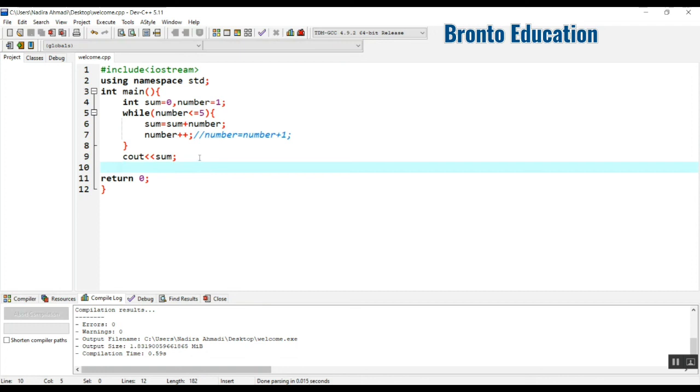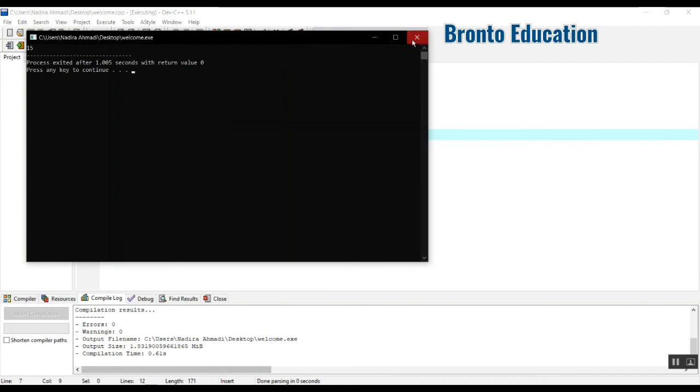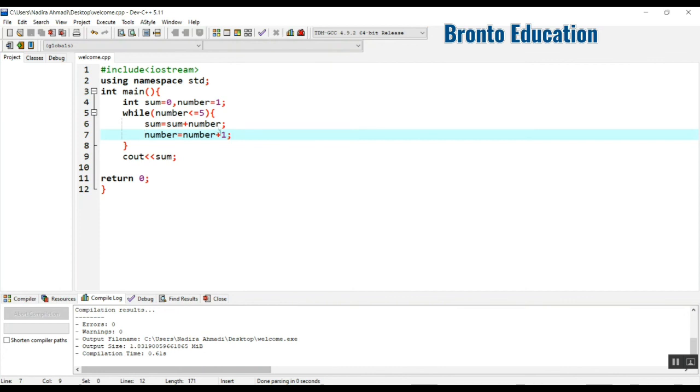This was the while loop. First I wrote the condition until which time it should run and execute these statements. You can also use number equals number plus one, so there's no difference. That was better, it will take less time for execution. Let's compile and run this. Yeah, 15. This is the same, just the execution will take a little bit more time, but the previous one takes less time.